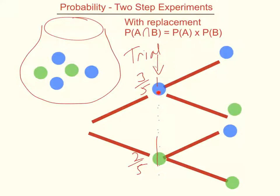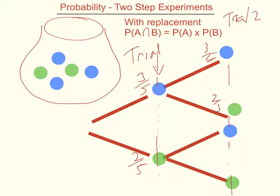If I follow this path and I've already taken a blue ball out and replaced it back in, then I can get a blue the second time or a green — there are still three blues and two greens in the bag. For this second trial, I can get a blue again with a three-fifths chance, or a two-fifths chance of getting a green. The same applies to the other branch: three fifths and two fifths. To work out the probability of getting two events in a row, we use the rule that the probability of A intersection B equals probability of A times probability of B, and that works here because the two events are independent of each other.